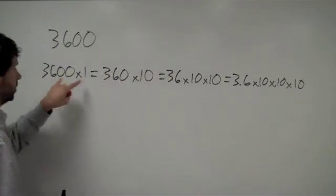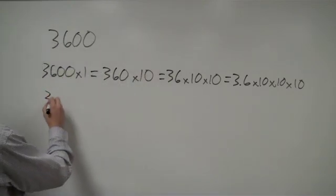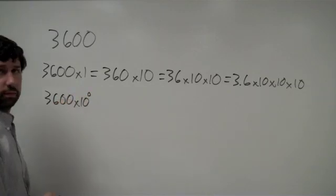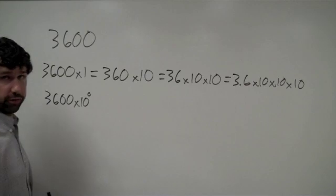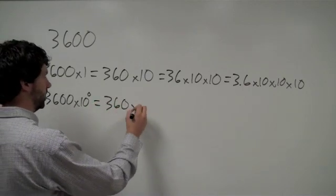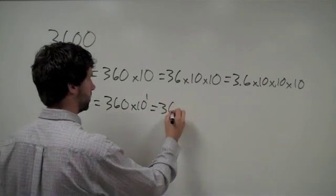Well, now I'm going to rewrite all of these using powers of 10 that we just looked at. So, this 3600 times 1, I would rewrite as times 10 to the 0. If I'm writing it in power of 10 notation. Well, that's the same as 360 times 10 to the 1st, which is the same as 36 times 10 to the 2nd.